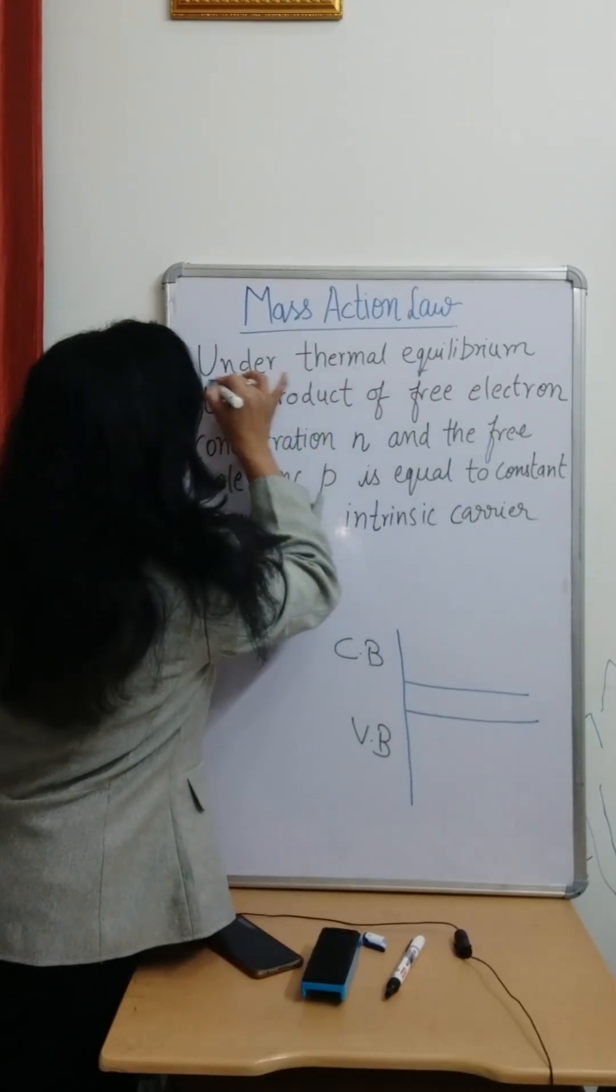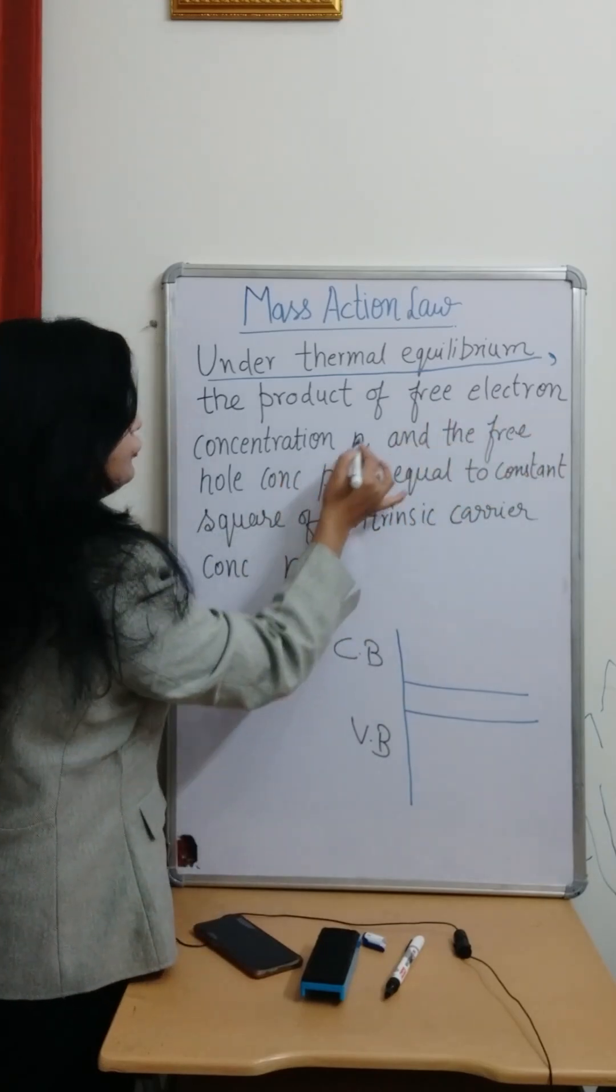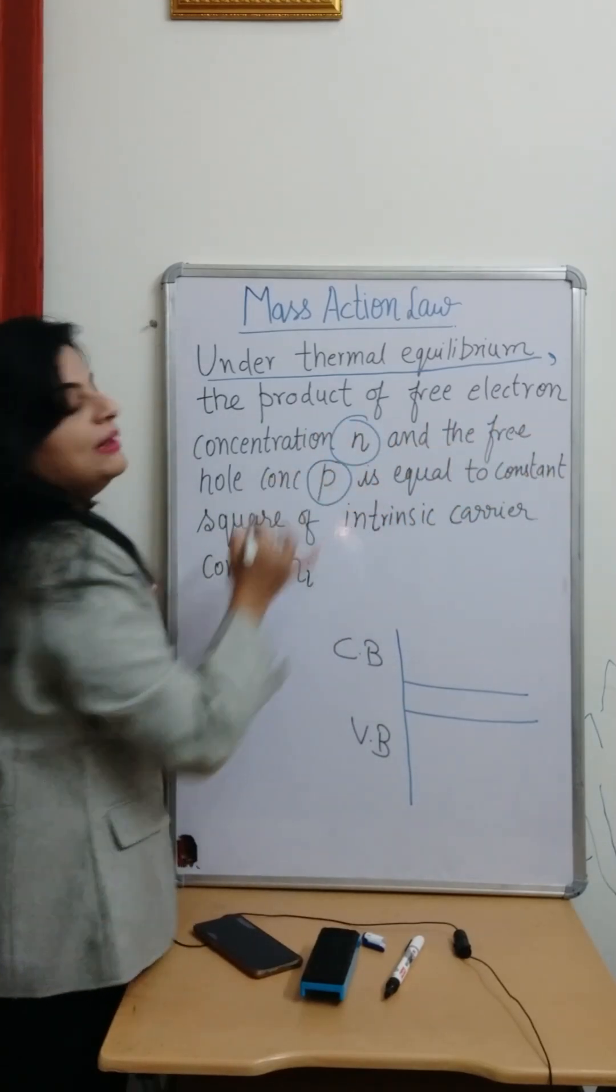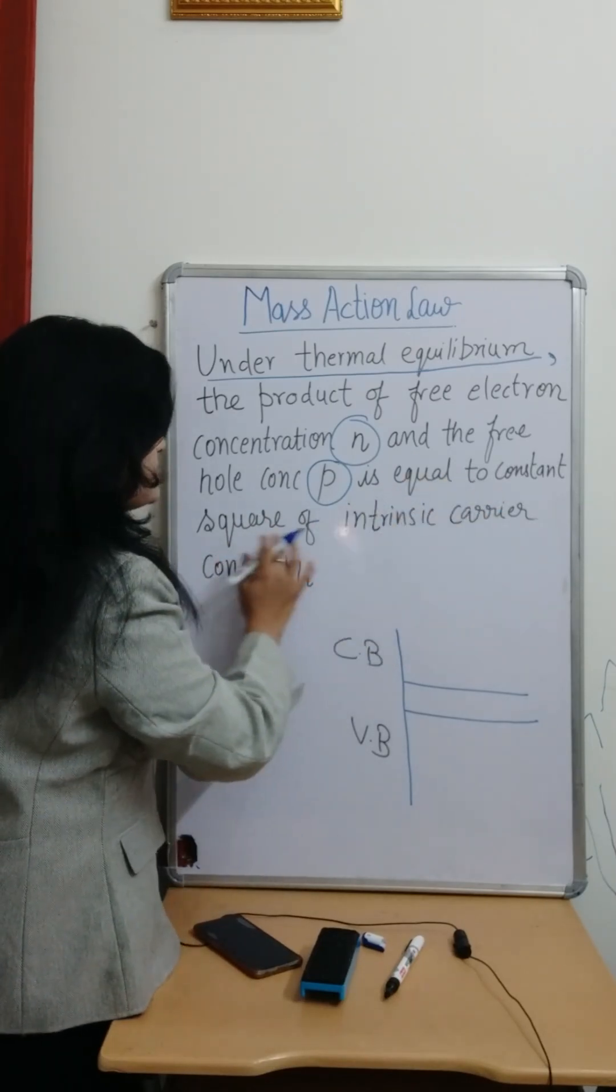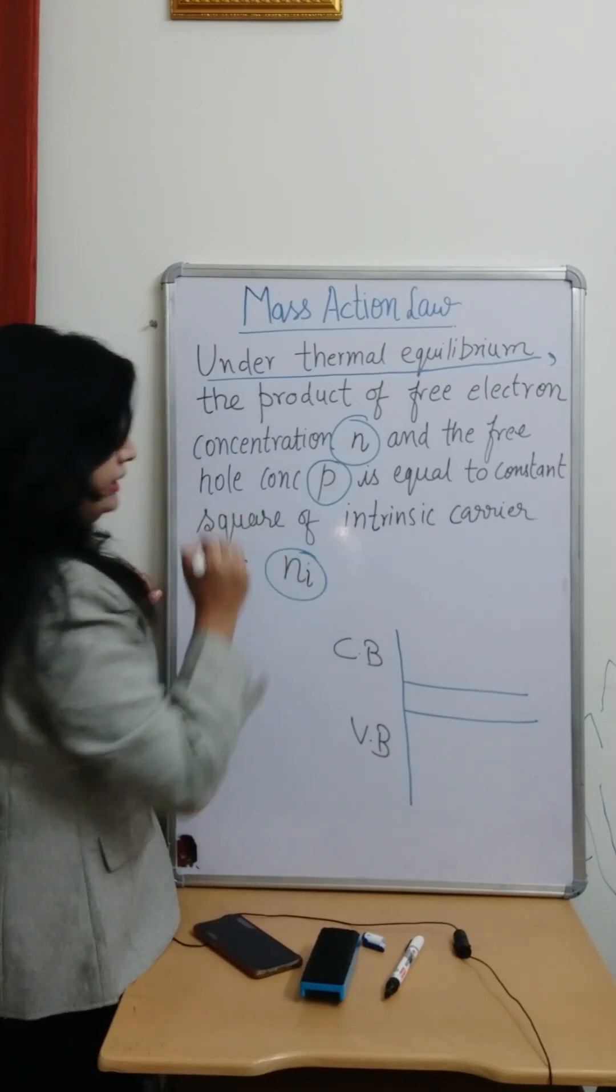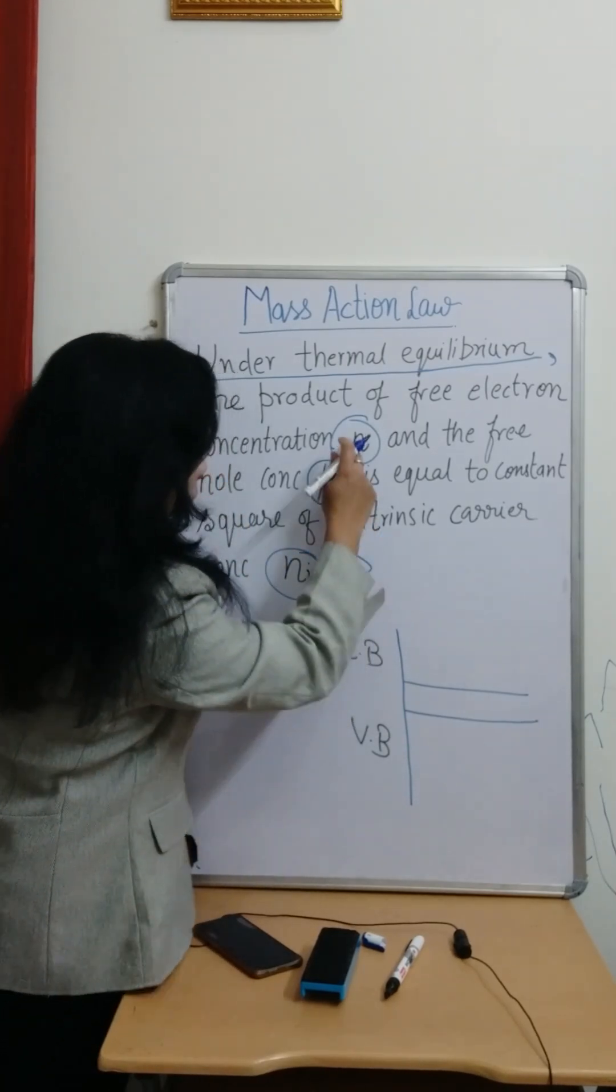Under thermal equilibrium, meaning at constant temperature, the product of free electron concentration n and the free hole concentration p is equal to a constant: the square of intrinsic carrier concentration ni.